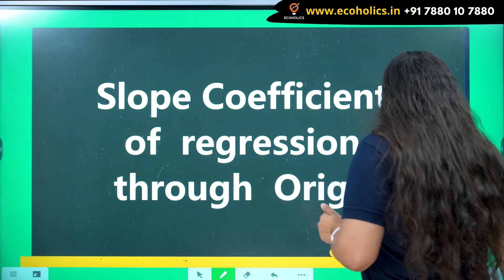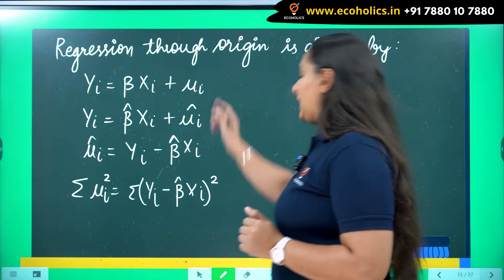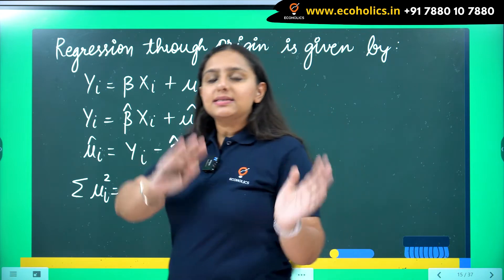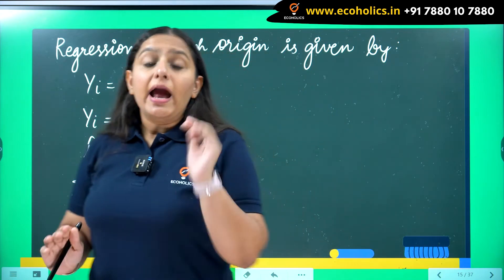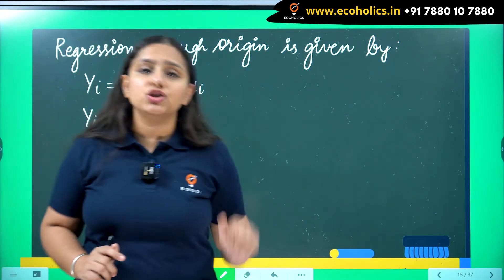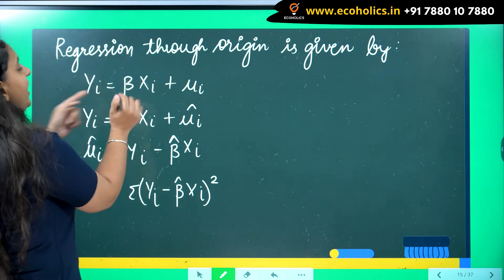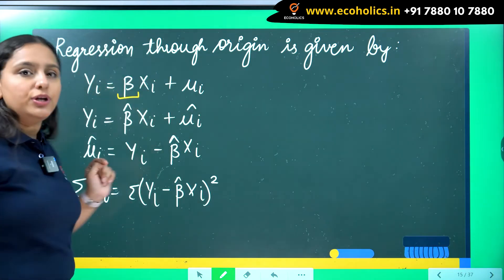A regression through origin takes the form of equation written over here. I will skip writing the intercept and I will write the relationship of dependent variable with independent variable only with the help of a slope parameter.